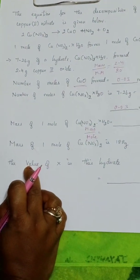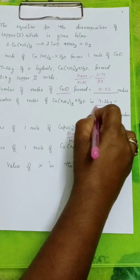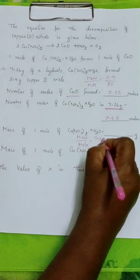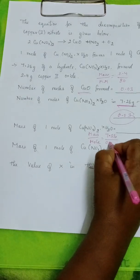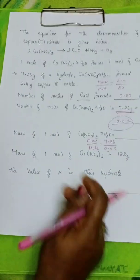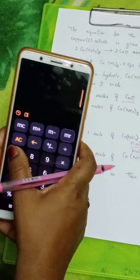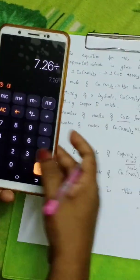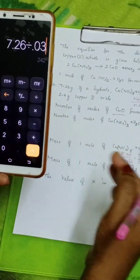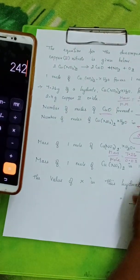What is the mass? Mass of hydrated copper nitrate, they have given 7.26 here. So, 7.26 and what is the mole? We found it here, 0.03. So, 7.26 divided by 0.03, we are getting 242.